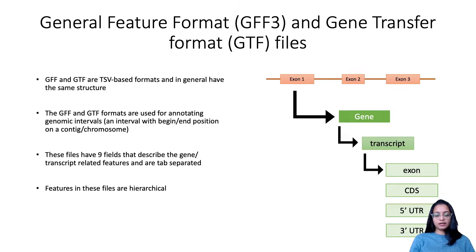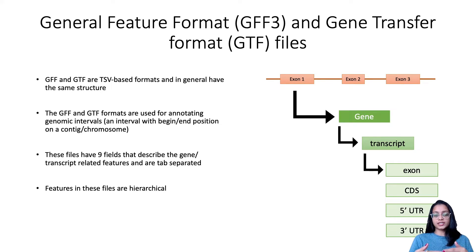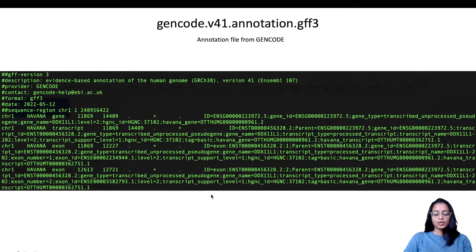Features in these files are hierarchical — they have a parent-child relationship. There is information about the gene, followed by information about the transcripts belonging to that gene, and within each transcript there is information about features like exons, coding sequences, 5' UTR, 3' UTR, and so forth. For each feature, there is information about which parent it belongs to — that is, which transcript or gene it comes from.